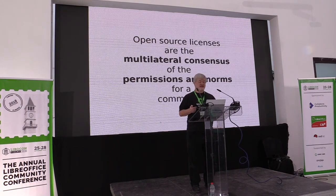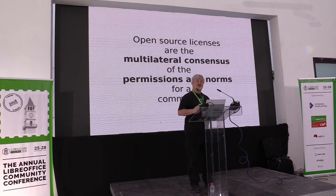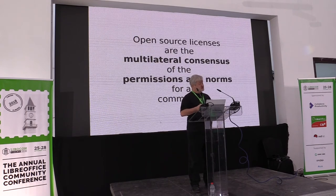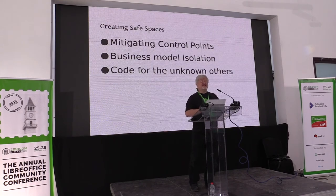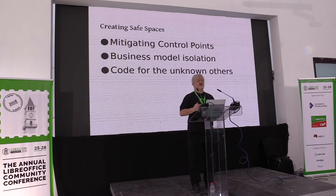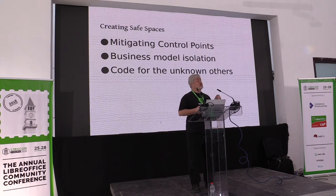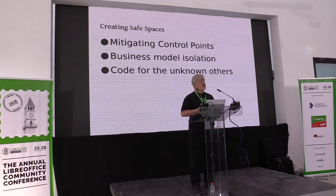All open source licenses have to give you those four freedoms — the community guarantees it has been checked. Open source licenses are a multi-lateral consensus of the permissions and norms for a community. And that's why you're never trying to negotiate them, because they've already been collectively agreed upon by a community, describing the norms of the collective need. An open source license creates safe spaces for a community to collaborate, by mitigating control points, by isolating business models, and by guaranteeing rights for unknown parties.